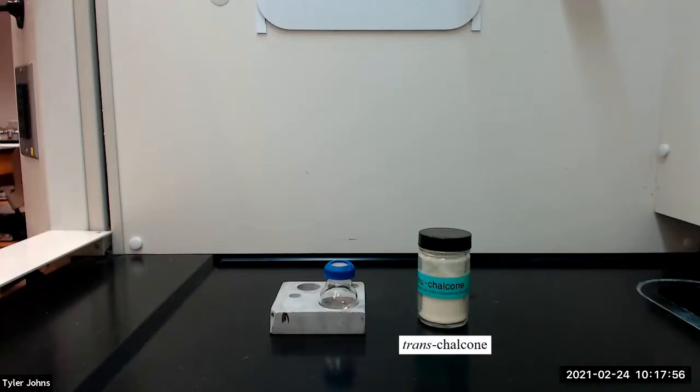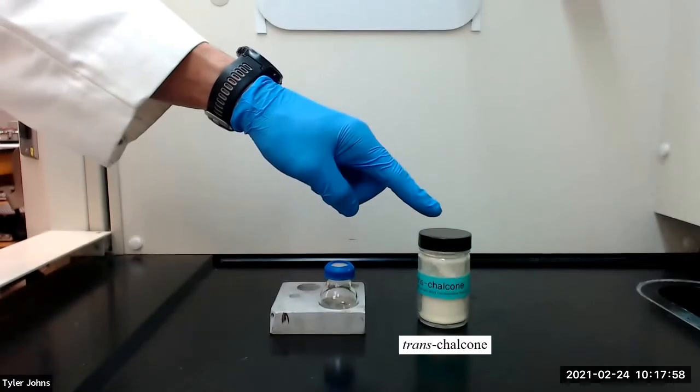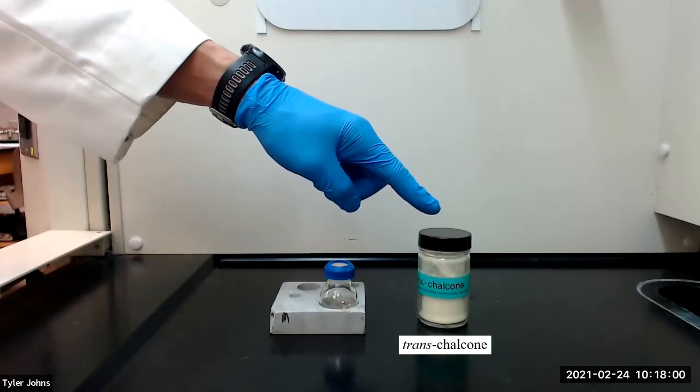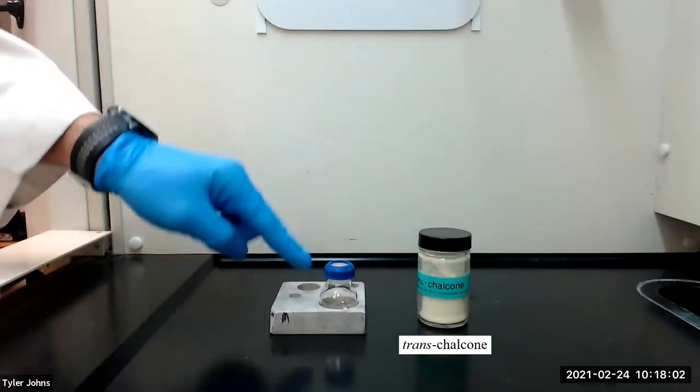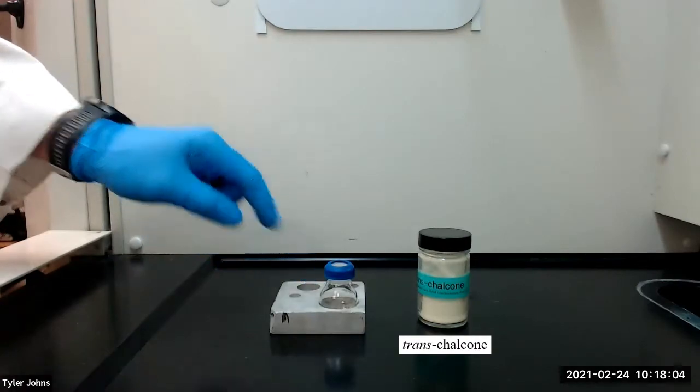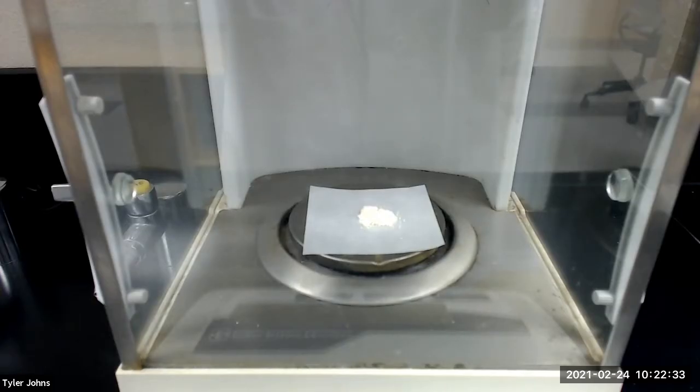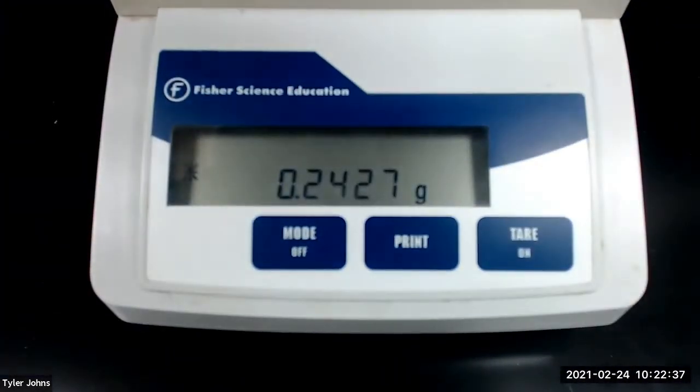Let's get started. We will begin by adding 0.24 grams of finely ground trans chalcone to a 10 milliliter round bottom flask. The mass of trans chalcone that we will be using is 0.2427 grams.